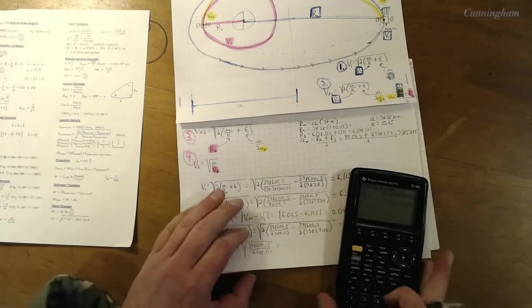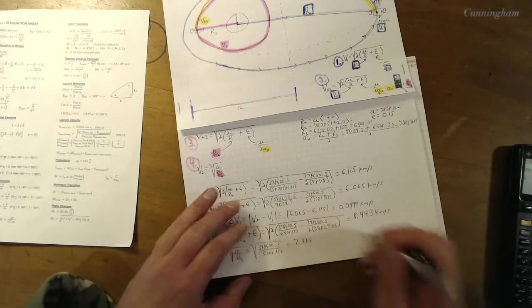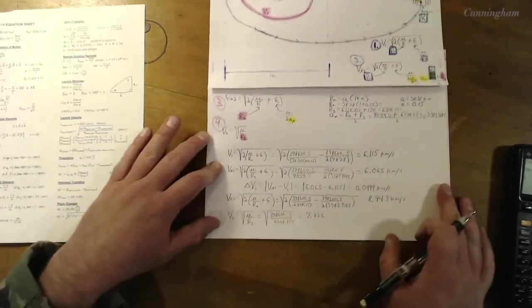Okay, so I get that to be 0.617 kilometers per second. Okay, so our total delta v. Oh man, I think I can fit it all in here. It's delta v1 plus delta v2.